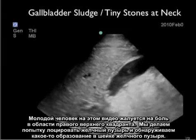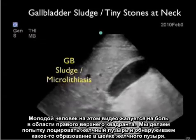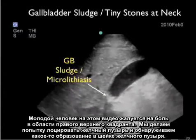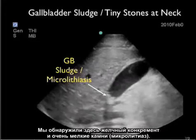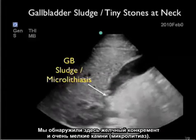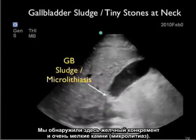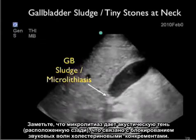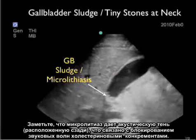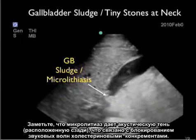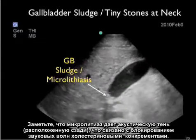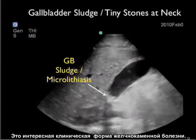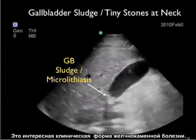Here's a video clip from a young male presenting with right upper quadrant pain. As we're looking through the gallbladder, we notice a finding within the neck of the gallbladder — a concretion of gallbladder sludge and also tiny gallbladder stones known as microlithiasis. Notice that the microlithiasis has posterior acoustic shadowing due to the blocking of sound waves through the concretions of the cholesterol crystals — an interesting finding on the spectrum of gallbladder disease.